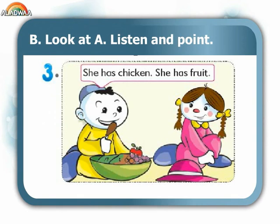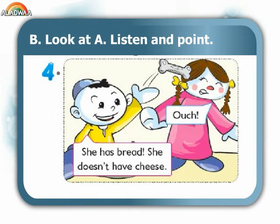3. She has chicken. She has fruit. 4. She has bread. She doesn't have cheese.